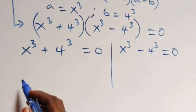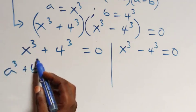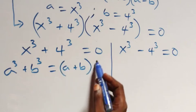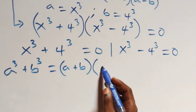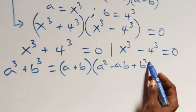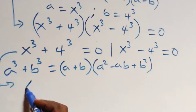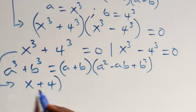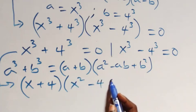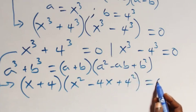Solving from the first case, this follows the sum of cubes: a³ + b³ = (a + b)(a² - ab + b²). Here this becomes (x + 4)(x² - 4x + 4²) equals 0, which is (x + 4)(x² - 4x + 16) equals 0.